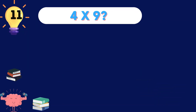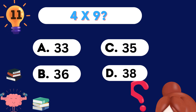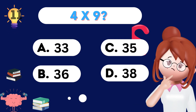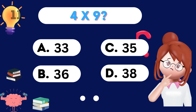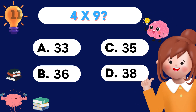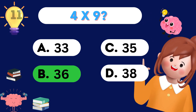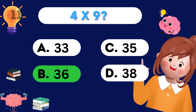What's 4 times 9? 4 times 9 is 36. Hooray!